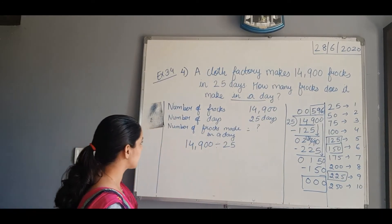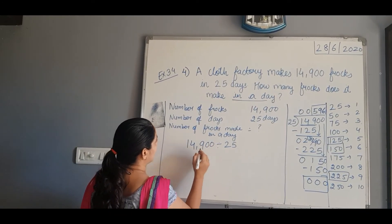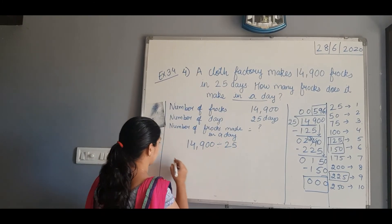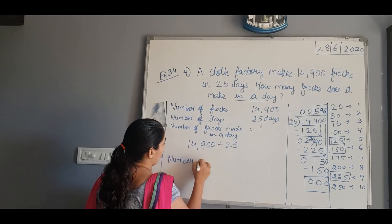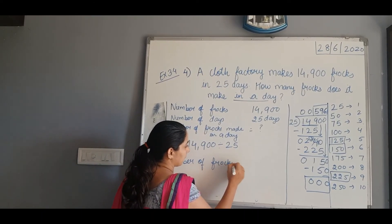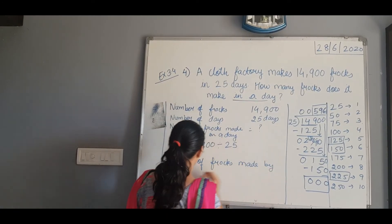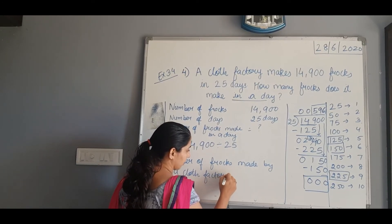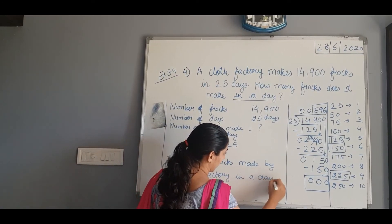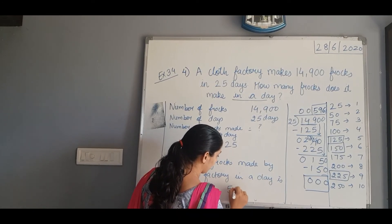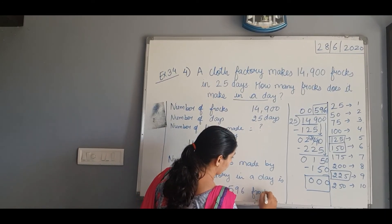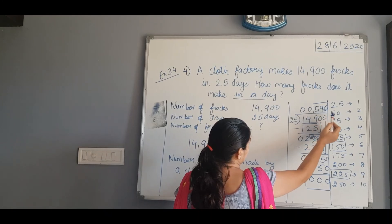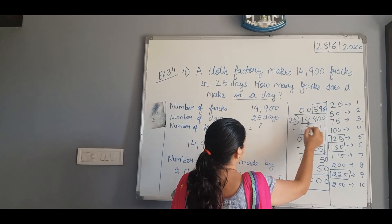So the final answer: the number of frogs made in a day by the cloth factory is 596. If you want to check, you will multiply 25 by 596 and you will get 14,900.